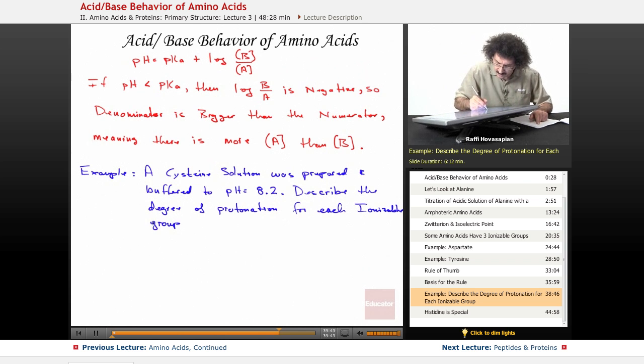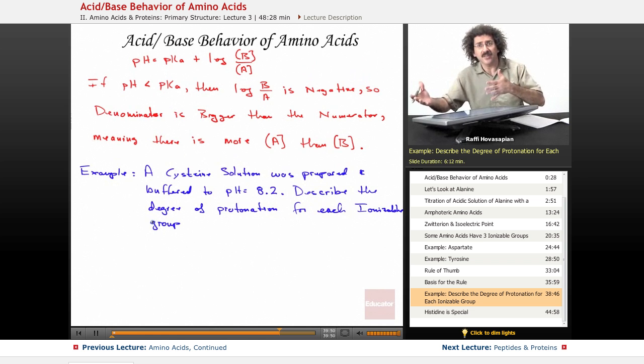In other words, I'd like you to tell me, does this amino acid exist in what form? What's the total charge on it? Which group is ionized? Which group is not ionized? That's what it's asking.